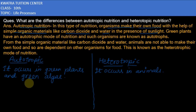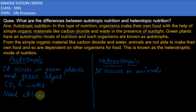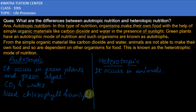Coming back to autotrophic nutrition: carbon dioxide and water are the raw materials which combine to form an organic compound. The autotrophic mode of nutrition requires chlorophyll and sunlight, and food is generally produced in the daytime because sunlight is present then.